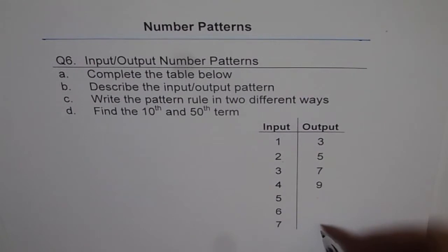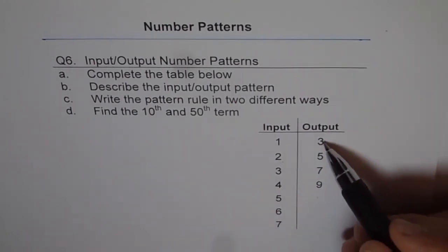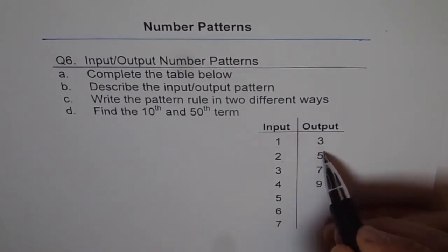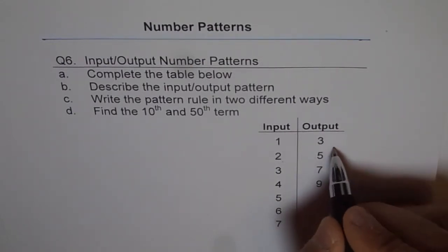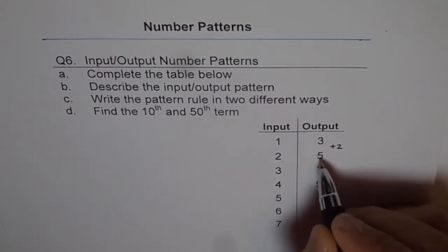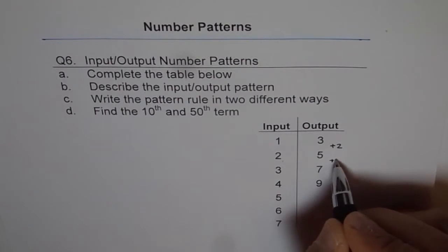Now here is how you can do the question. First is, see how do you get the next term of the output. So, from 3 to 5, how do you get to 5? If I add 2, I get 5. 5 to 7, plus 2.